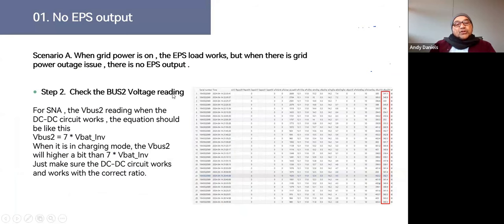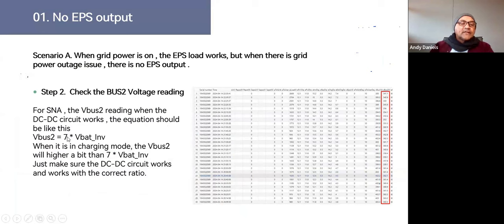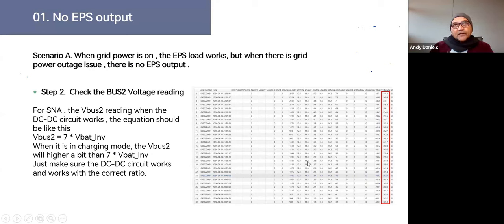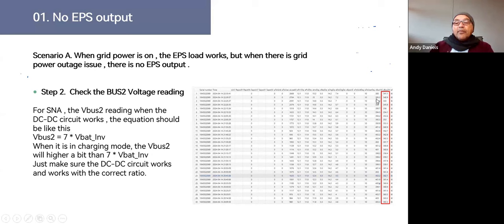The BUS2 voltage column is key. For the SNA, when the DC-to-DC circuit is working, there's a specific ratio. For the SNA6, the multiplier is 7 — so if battery nominal voltage is 50 volts, BUS2 should read 350 volts (50 × 7). For the SNA5, the multiplier is 6, so 50 × 6 = 300 volts. This is how we confirm the DC-to-DC circuit is working correctly. If we get the expected value, the circuit is working perfectly.